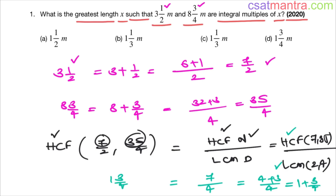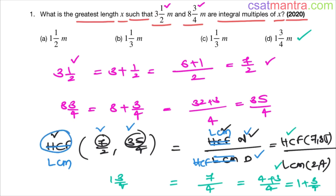Just to note: if we were asked to find the LCM of these fractions instead, then LCM of fractions = LCM of numerators divided by HCF of denominators. So when it is HCF, you have HCF in the numerator and LCM in the denominator; when it is LCM, you have LCM in the numerator and HCF in the denominator.